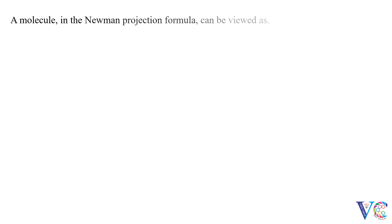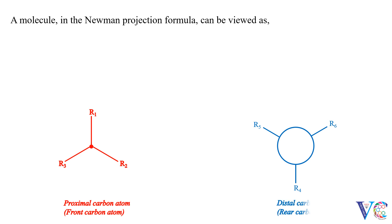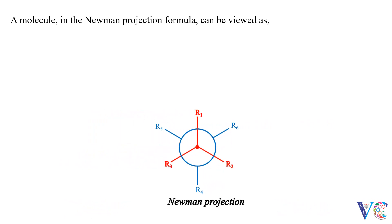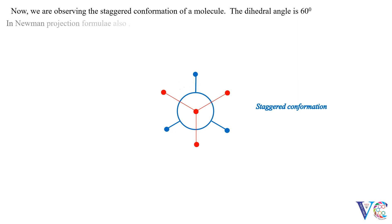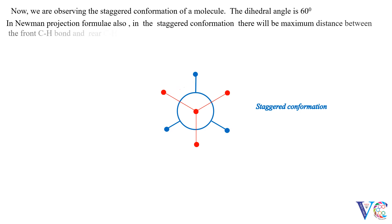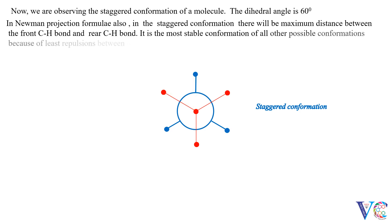A molecule in the Newman projection formula can be viewed as follows. Now we are observing the staggered conformation of a molecule. The dihedral angle is 60 degrees. In the Newman projection formulae also, in the staggered conformation, there will be maximum distance between the front C-H bond and the rear C-H bond. It is the most stable conformation because of least repulsions between the electron pairs of adjacent C-H bonds.